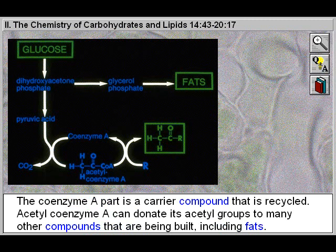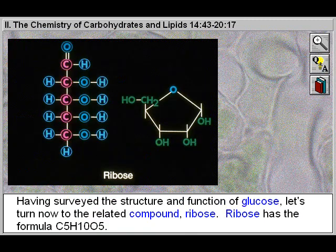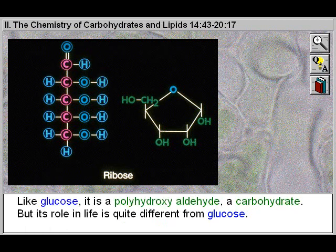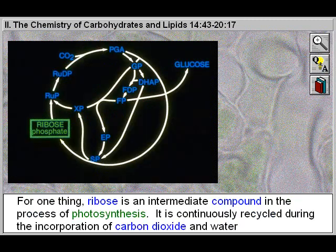Acetyl coenzyme A can donate its acetyl groups to many other compounds being built, including fats. Having surveyed the structure and function of glucose, let's turn now to the related compound ribose. Ribose has the formula C₅H₁₀O₅. Like glucose, it is a polyhydroxy aldehyde — a carbohydrate — but its role in life is quite different from glucose.